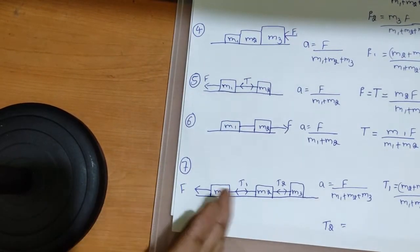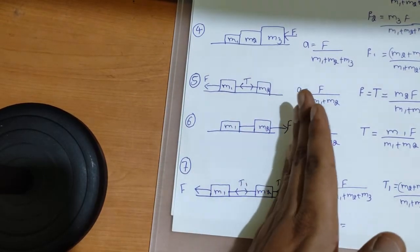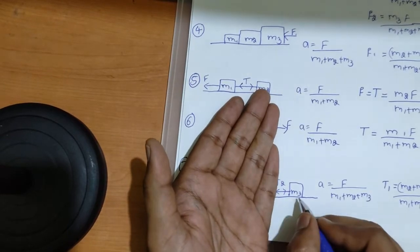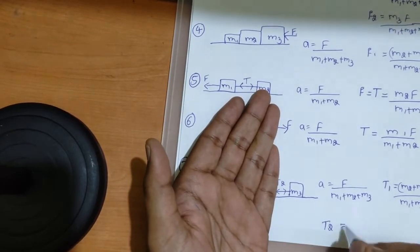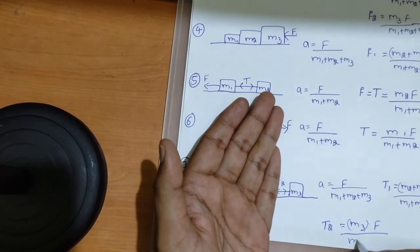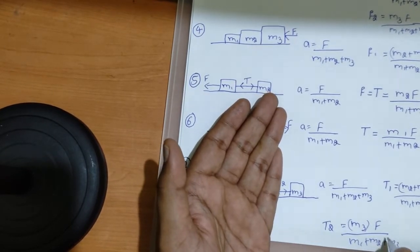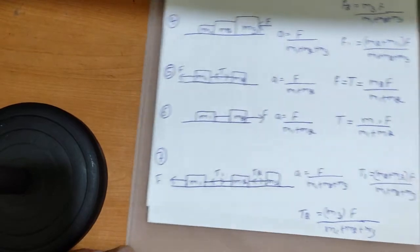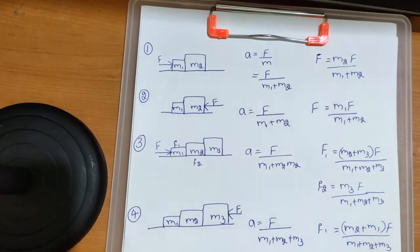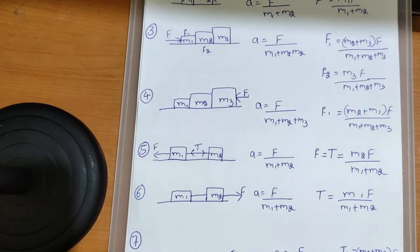Now if they ask you to calculate tension t2: the force is acting from the left direction. From here onwards, forget everything to the left up to and including m2. What is remaining is m3. So t2 equals m3 times F by m1 plus m2 plus m3. In this way you can calculate the tension, the contact force, as well as the acceleration.